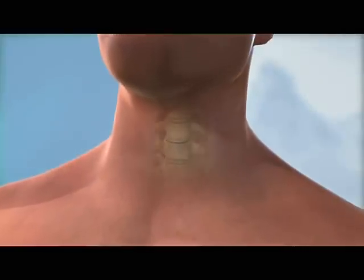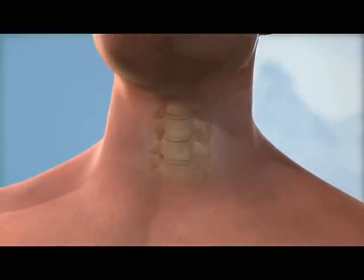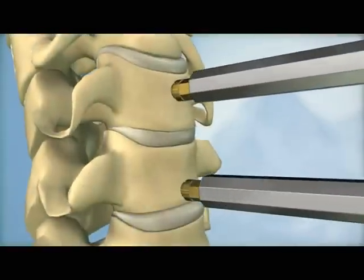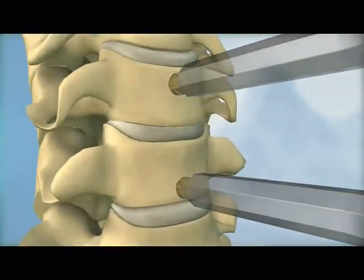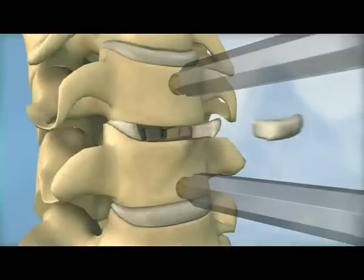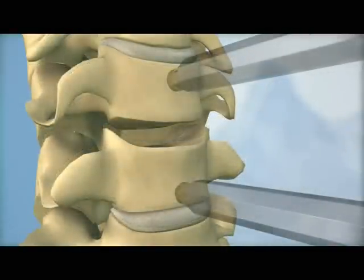First, an incision is made in the neck at the location of the diseased disc and the soft tissues are moved away from the front of the diseased disc. The surgeon then performs a discectomy and remobilization, removing the diseased disc and releasing pressure on the surrounding nerves and spinal cord.